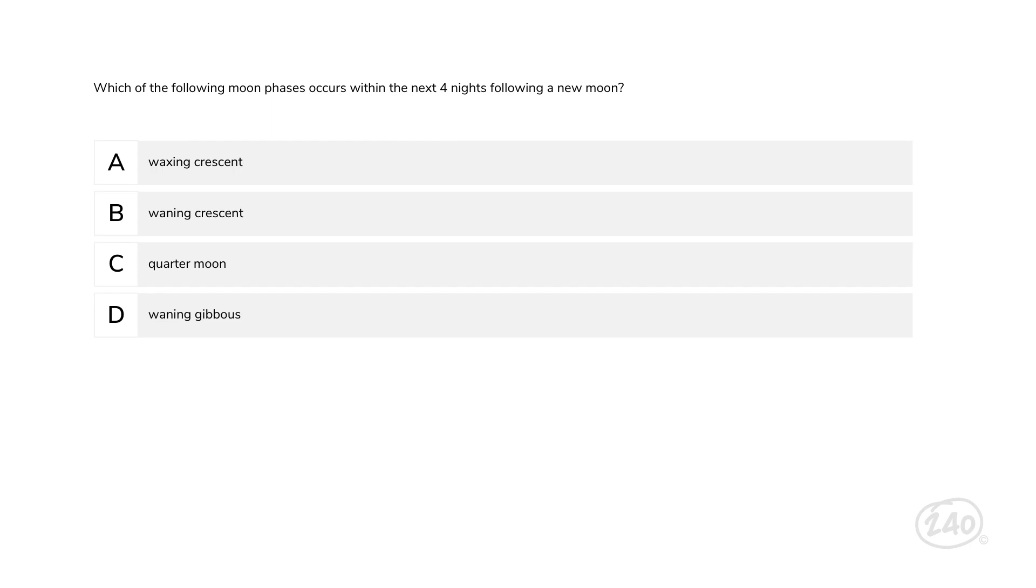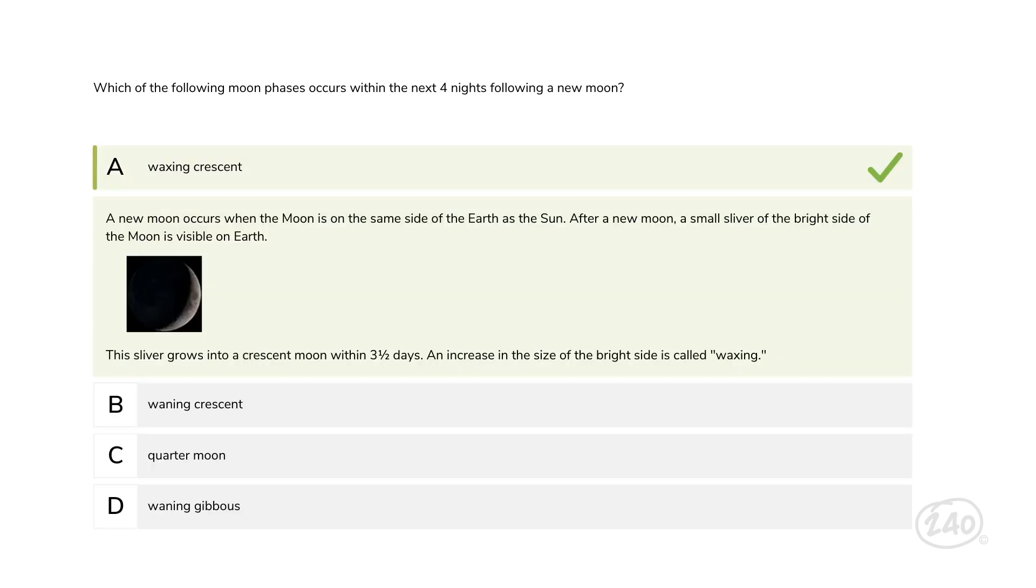Last question. We're revisiting the phases of the moon. Which of the following moon phases occurs within the next four nights following a new moon? A new moon occurs when the moon is on the same side of the earth as the sun. After a new moon, a small sliver of the bright side of the moon is visible on earth. This sliver grows into a crescent moon within three and a half days. An increase in the size of the bright side is called waxing. So this answer is best. And that's it. We've practiced a question from every competency in the Mega Elementary Education Subtest 1.